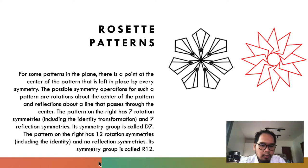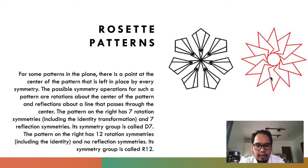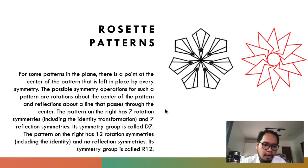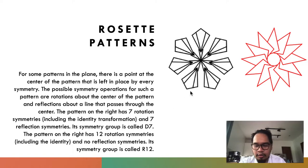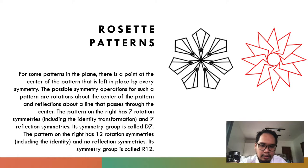Its symmetry group is what we call D7. The pattern on the right has 12 rotation symmetries — one through twelve — including the identity, and no reflection symmetries. Its symmetry group is what we call R12. You can see a lot of different combinations of symmetry groups. For the rosette patterns, you can visit the module where there is an interactive that shows different types of patterns.